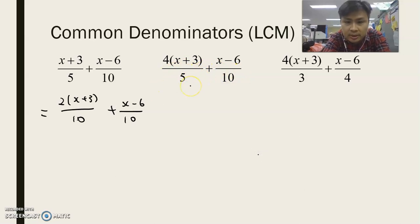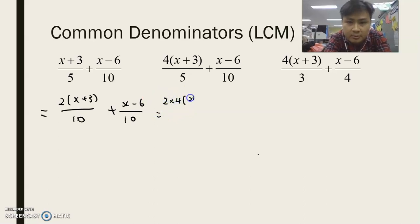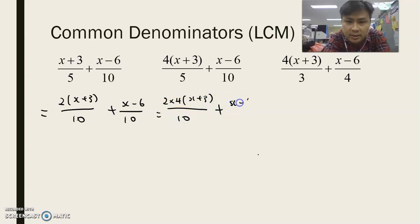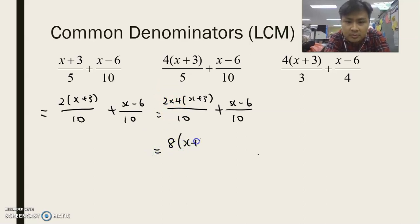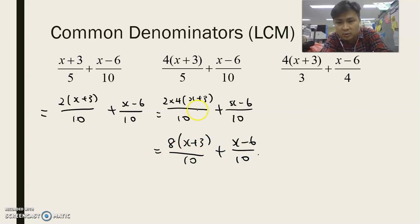So what we need to do now is 2 times 4, multiply by (x + 3) over 10, plus (x − 6) over 10. This 2 times 4 — we can actually do a mental calculation — so it will become 8 multiplied by (x + 3) over 10, plus (x − 6) over 10. This is how we actually get a common denominator.